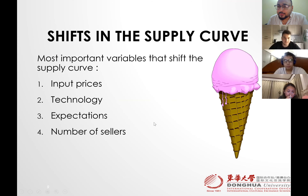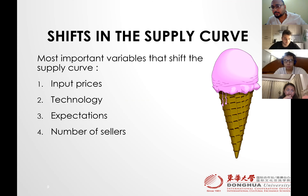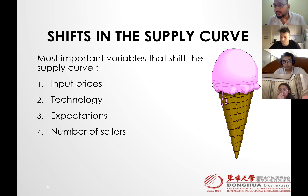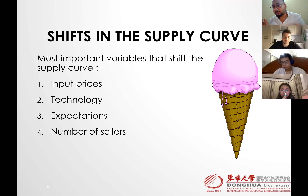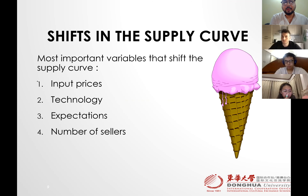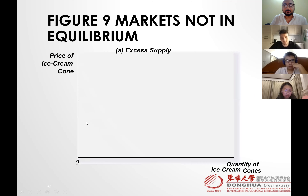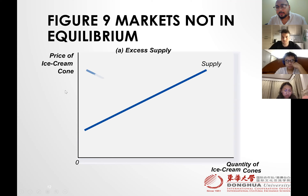A shift occurs when the reason is not price — other variables are at play. This is the same concept we discussed for demand: if quantity demanded or quantity supplied increases or decreases due to non-price factors, we see a shift. For supply, those variables are input prices, technology, expectations, and number of sellers.